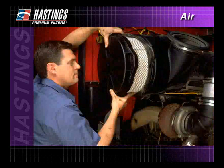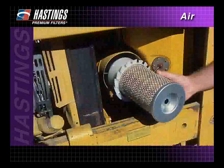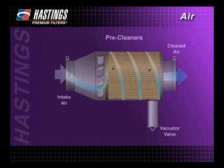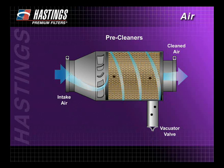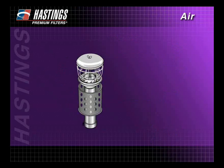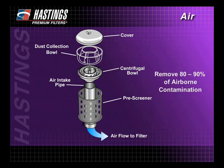Many heavy duty engine systems have only a primary or single stage filter. Others add a secondary element inside the primary filter. In many heavy duty applications, a separator or pre-cleaner is included. The pre-cleaner works to separate heavier particles from the air and can be designed as an integral part of the primary filter, as shown here. It can also be built in or attached to the filter housing. Pre-cleaners can remove 80 to 90 percent of airborne contamination before it reaches the filter.